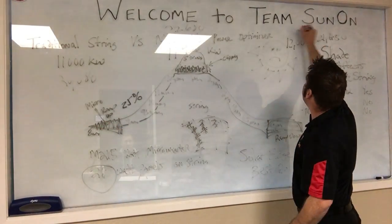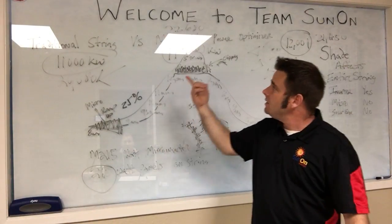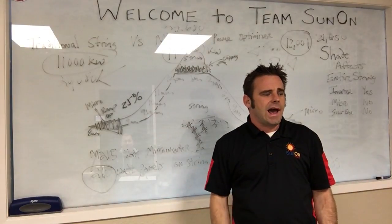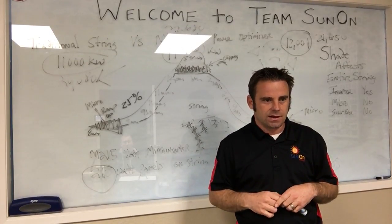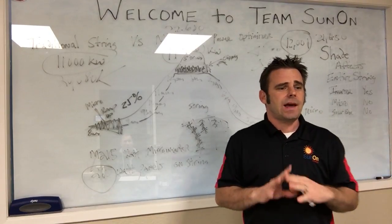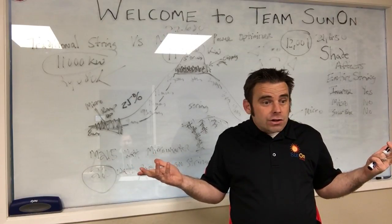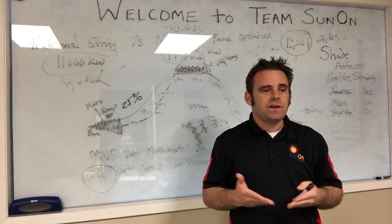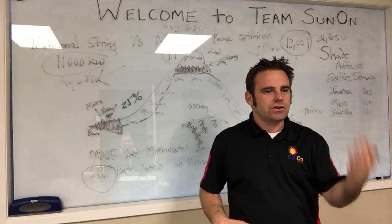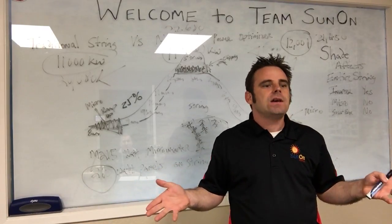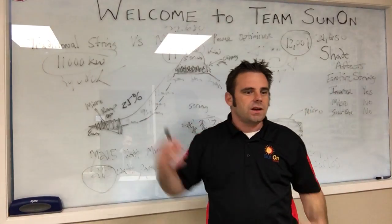It always boils down to the customer - cost, production, and what makes the most sense for them. It's all based on the scenario of the home: what works best for the client, what gives the best bang for their buck and saves them the most money. Even with zero shade, power optimizers were still about 1.7% better. But if you have a perfect ground mount with no shade facing the perfect direction, is that cost worth it, or do you go with the traditional string inverter?